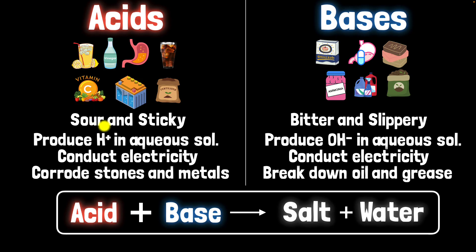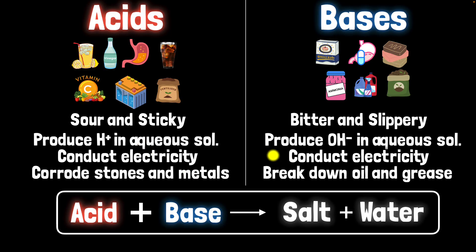Putting it all together: acids, we started thinking of them as sour and sticky, but then realized they produce H+ — electrically charged hydrogen atoms — in aqueous solutions. Because they produce electrically charged particles, they are electrolytes and conduct electricity. They can also corrode stones and metals. Bases, we started thinking of as bitter and slippery, but they produce hydroxide OH- in aqueous solutions. They too are electrolytes and conduct electricity, and they can break down oil and grease — which is why they're used in soaps and detergents. And if you mix acids and bases together, they give you salt and water — the neutralization reaction. These definitions are still not complete; we still have to talk about pH, which we'll do in the next video.